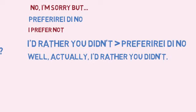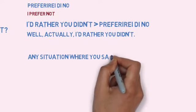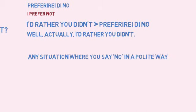Quindi I, apostrofo D, che sarebbe would, rather you didn't. Unusual, isn't it? È molto bello questo, ho sentito dire spesso. Yeah, and it's very common. So, well, actually, I'd rather you didn't. And it's good for any situation where you have to say no in a polite way. Okay, those are a couple of examples, but in the next lesson we'll do some more, because this is not easy language.